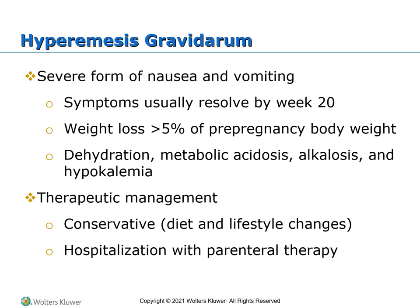Wernicke's encephalopathy is the presence of neurological symptoms caused by biochemical lesions in the central nervous system after exhaustion of B vitamin reserves — in particular thiamine (vitamin B1). It can cause confusion and loss of mental activity that can progress to coma and death, loss of muscle coordination, leg tremor, visual changes such as abnormal eye movements (nystagmus), double vision, and eyelid drooping.